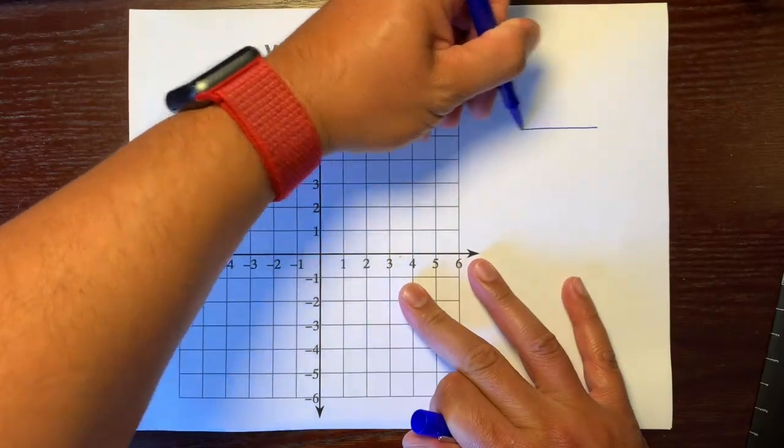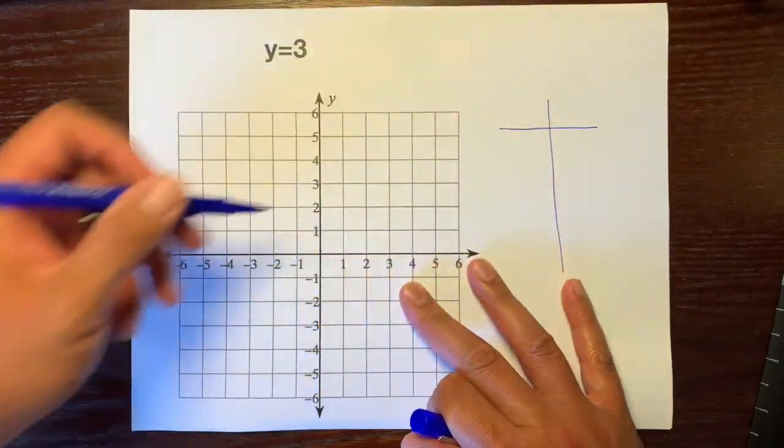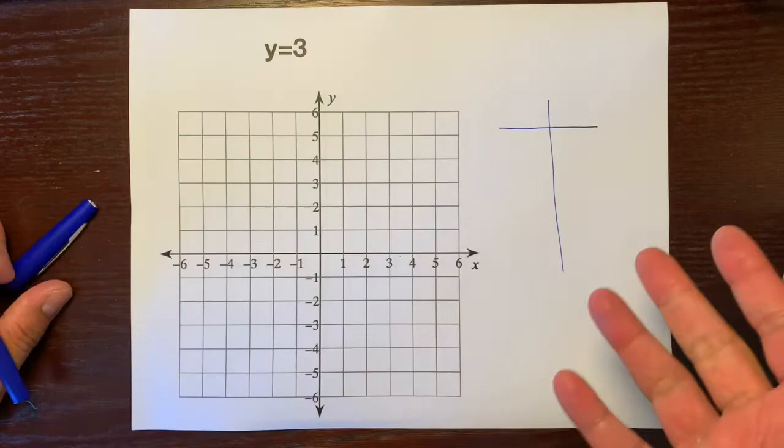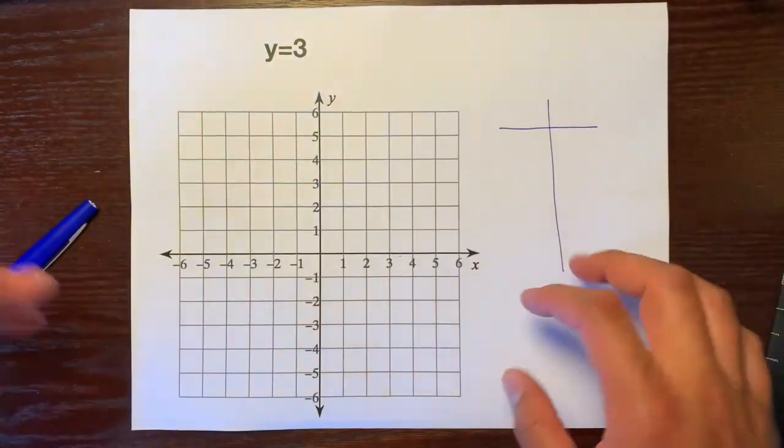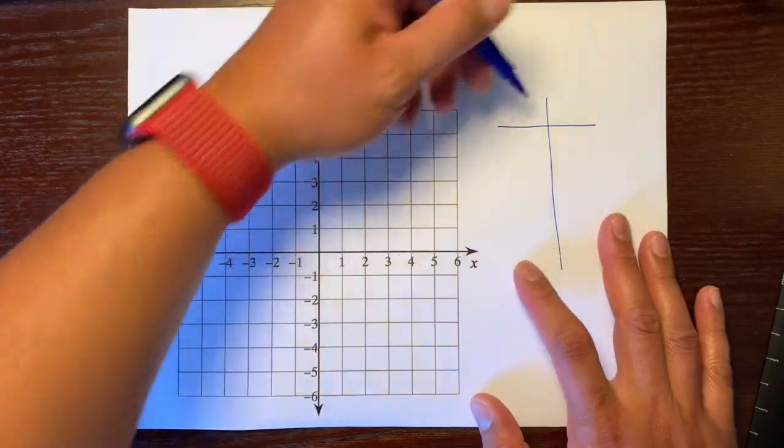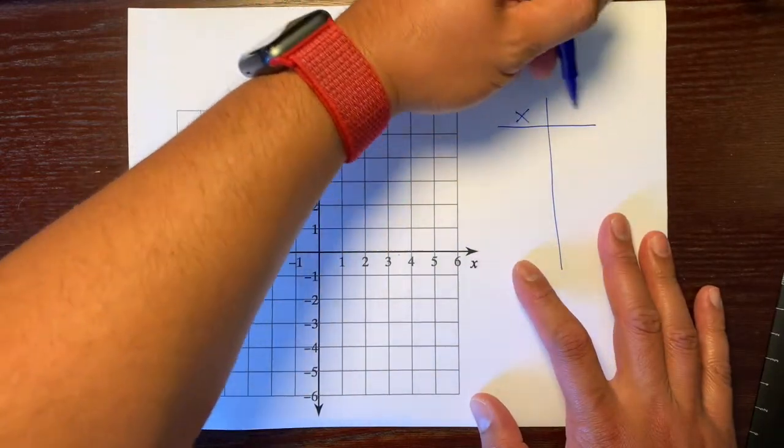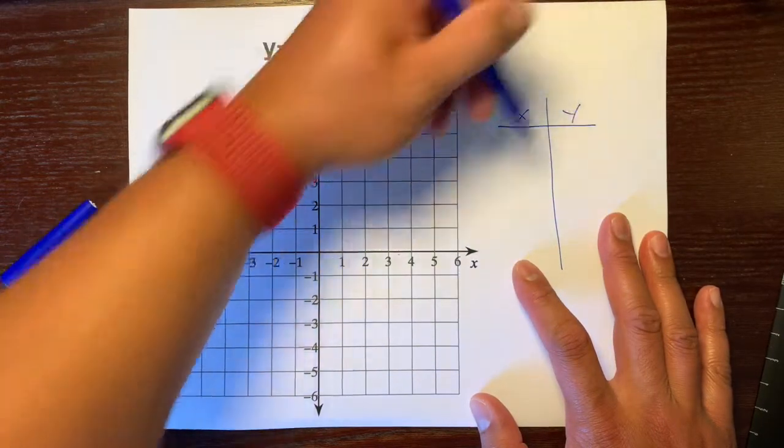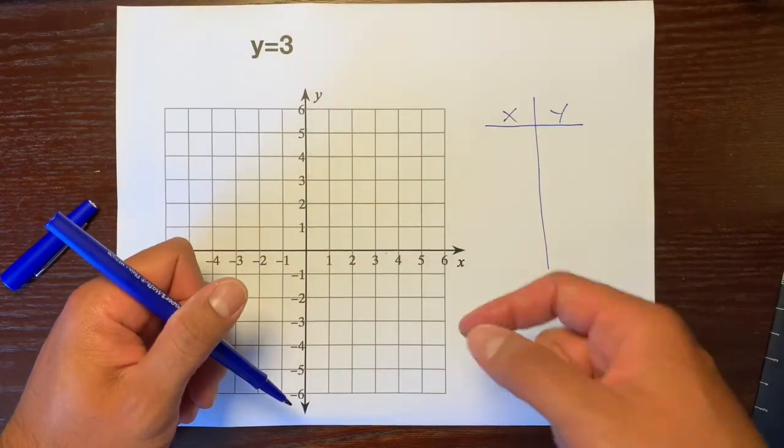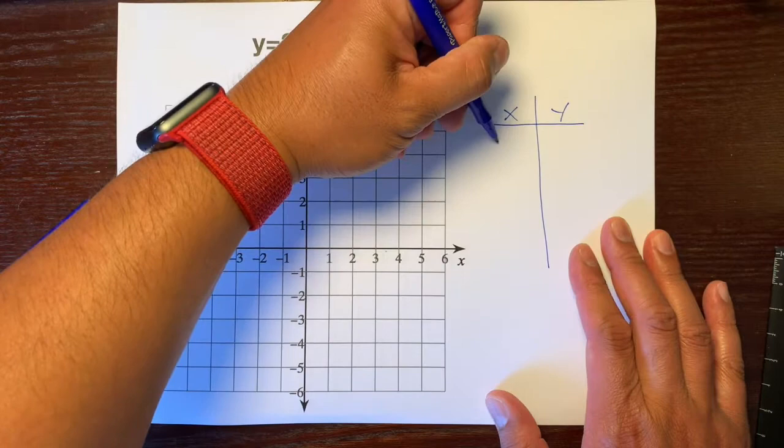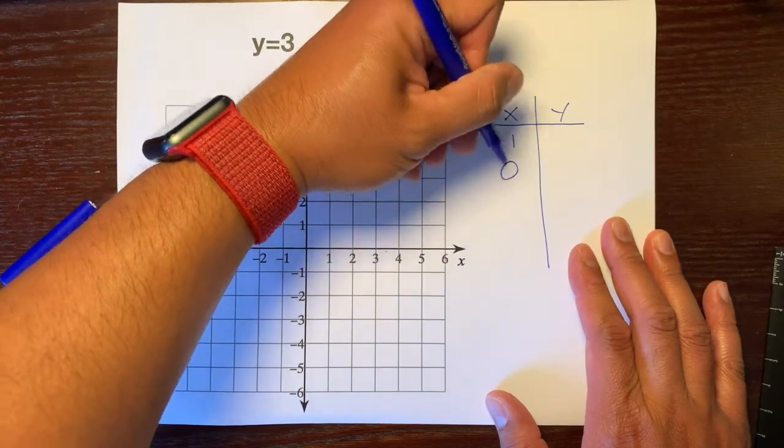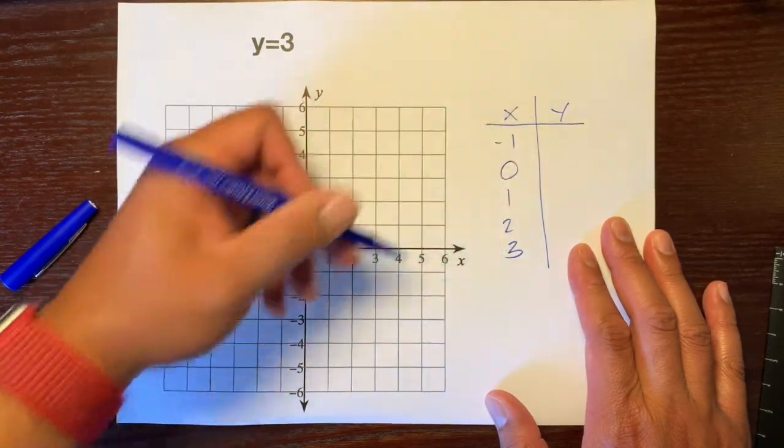We're going to draw a t because this will help us show why the graph of this looks like the graph this is. Remember the t-table, the left side is x and the right side is the y. And let's just start putting in some inputs. Let's put negative 1, 0, 1, 2, and 3.